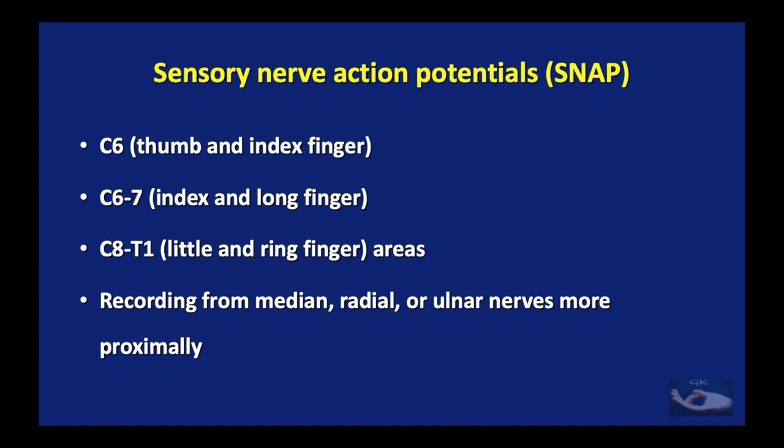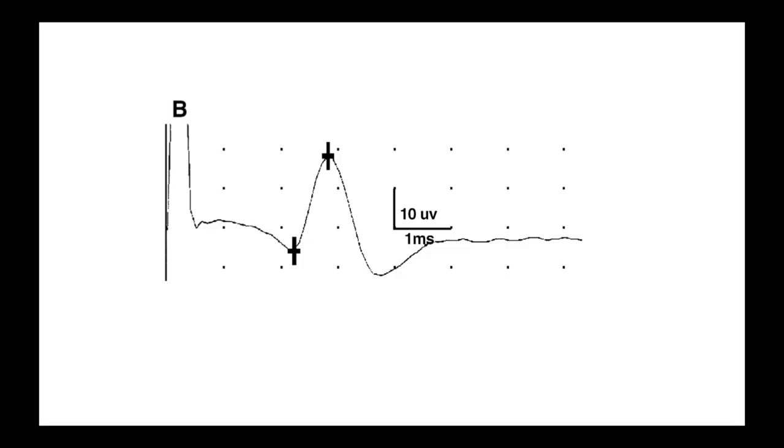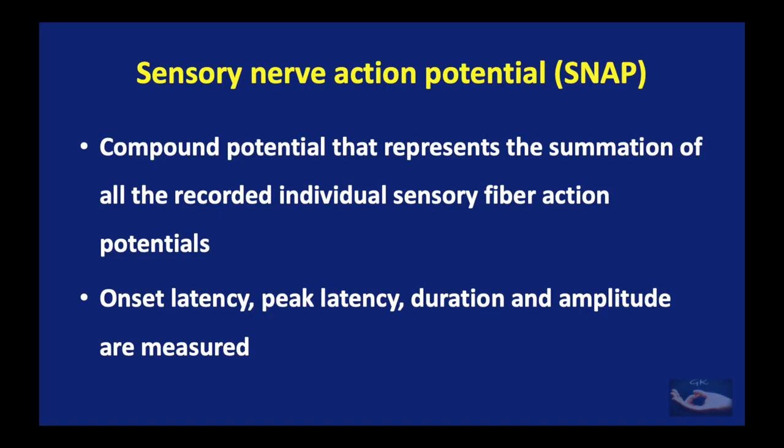There are particular areas from which sensory nerve action potentials are recorded. For the C5 root of the brachial plexus, recording is done from the thumb and index finger. For C6-7, the index and middle finger. For C8-T1, the little and ring finger areas. The recording is done in the median nerve, radial nerve, or ulnar nerves more proximally. When we analyze the sensory nerve action potential, it is a compound potential that represents the summation of all the recorded individual sensory fiber action potentials.